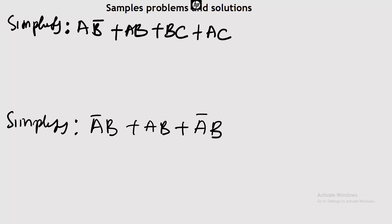At this juncture, we're going to be looking at a few examples. The first one is: simplify Ā + AB + BC + AC. Now to do this, let's factorize. That is a good thing about Boolean — you can also manipulate it as if you are manipulating your usual mathematical expression.